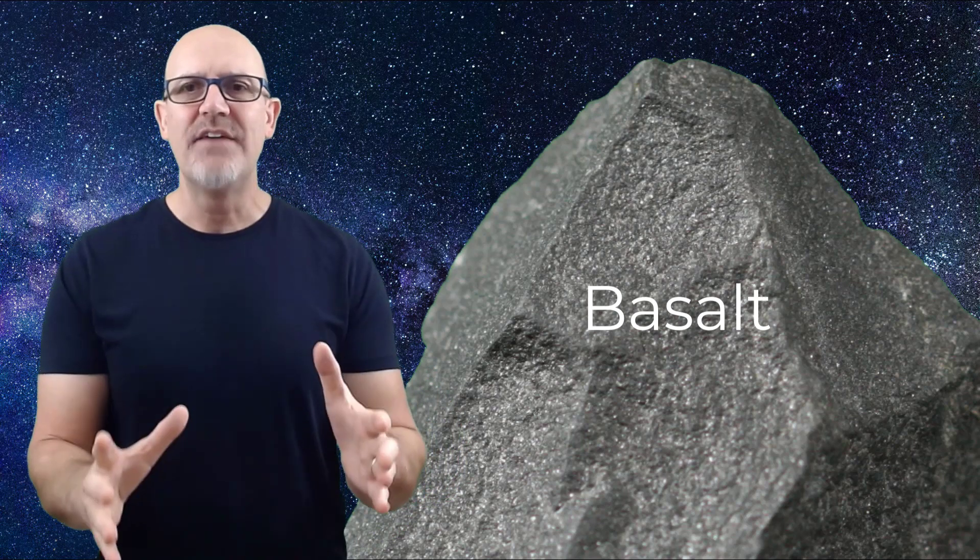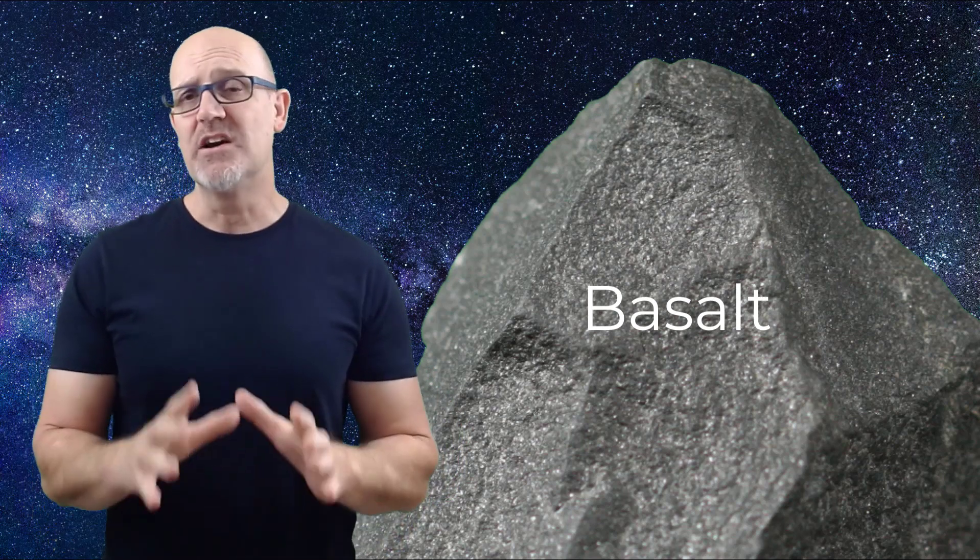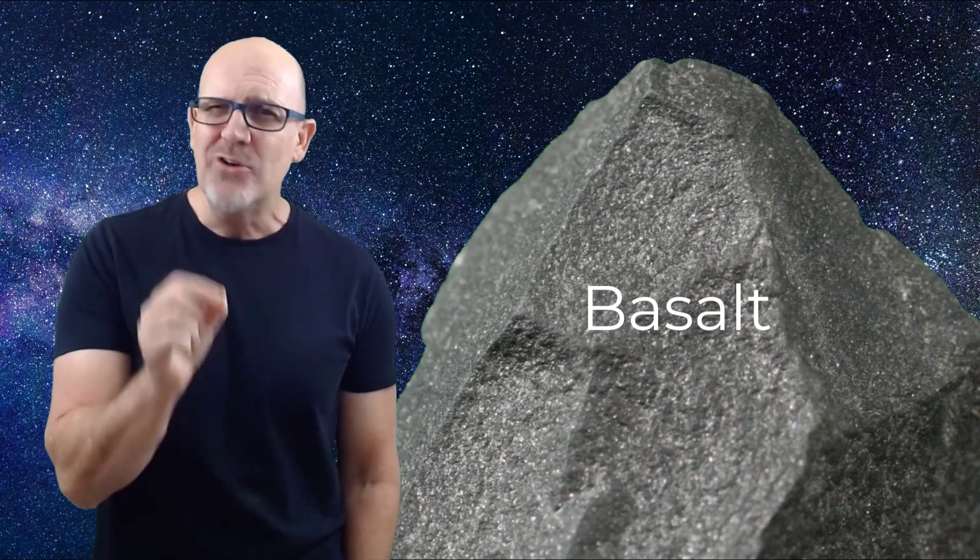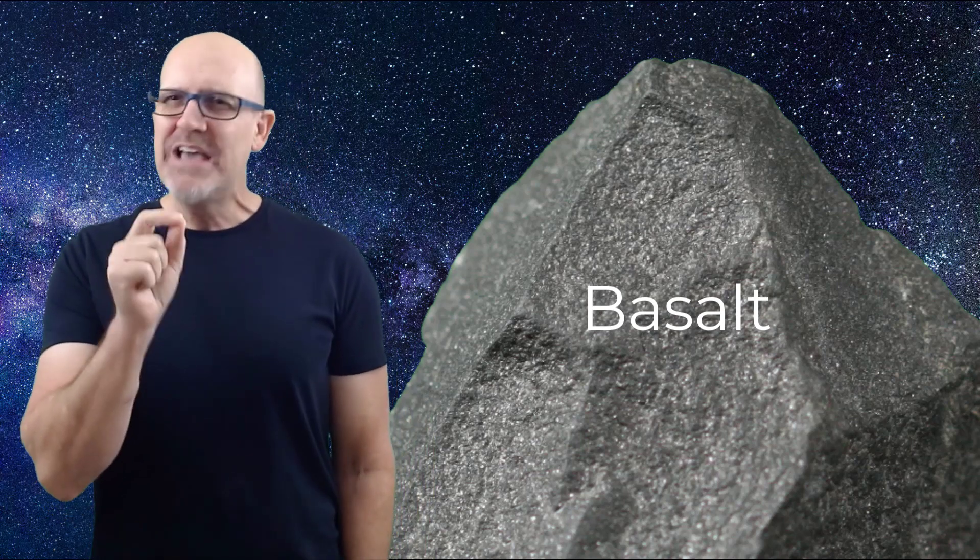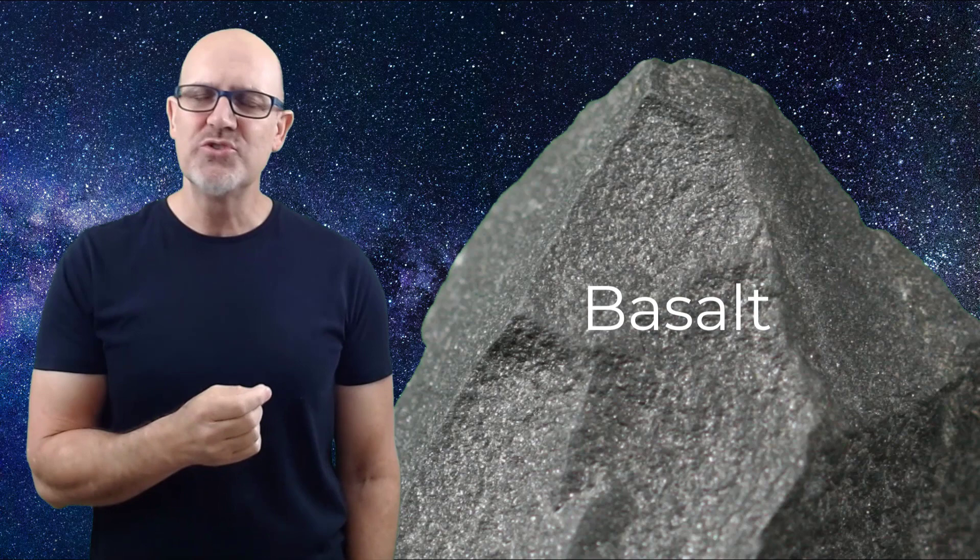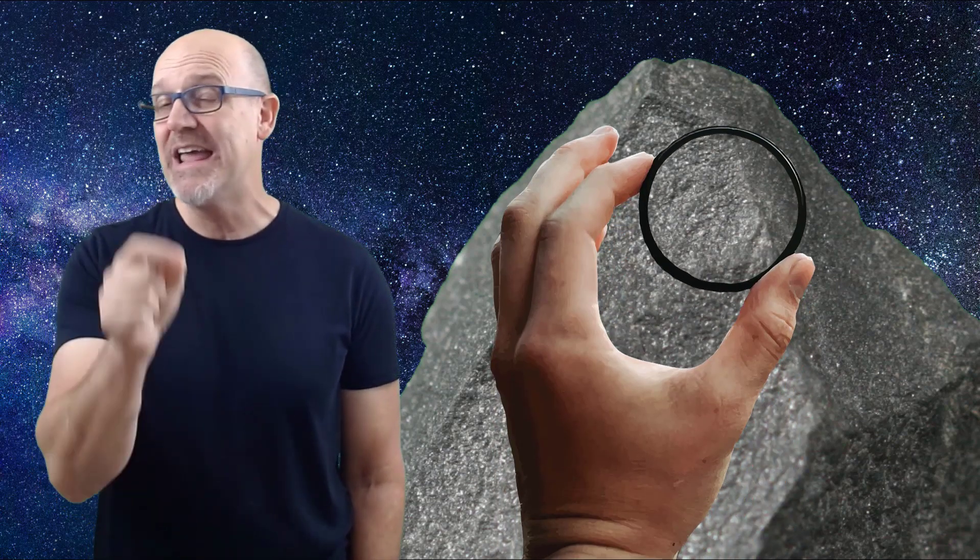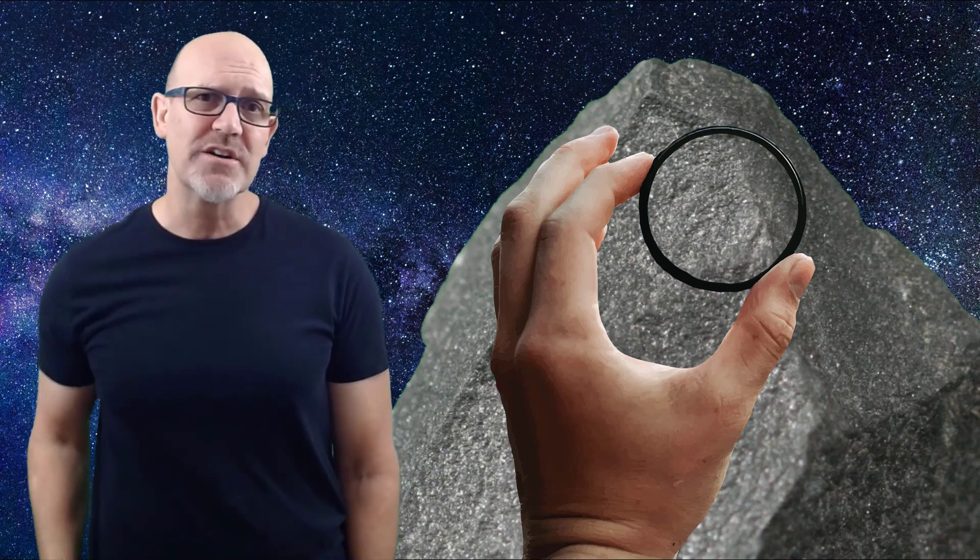Now let's have a look at three common extrusive igneous rocks. The most common extrusive igneous rock is basalt. Basalt forms when volcanic lava cools. It's typically a grey colour, or maybe a black colour. And even when you look at it really closely, you can't see any of the crystals with the naked eye. Instead, you're going to need a magnifying glass, and again, that is diagnostic for extrusive igneous rocks.